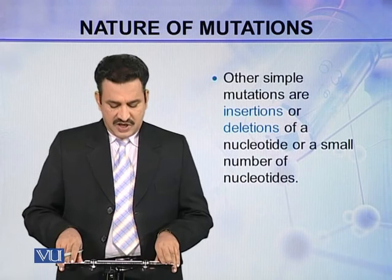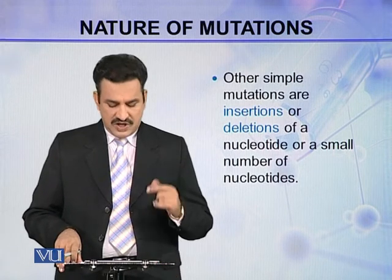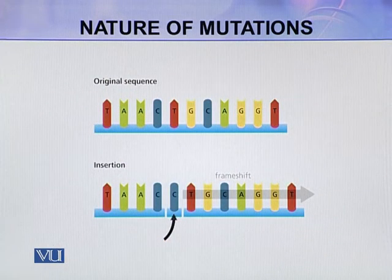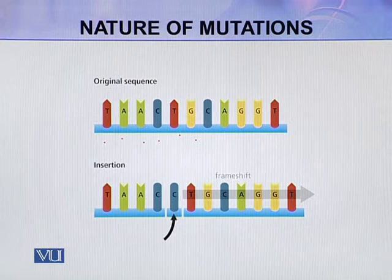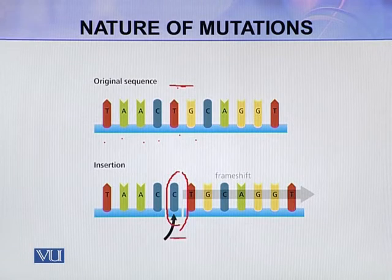Other simple mutations are insertions or deletions of a single nucleotide or a small number of nucleotides. For example, here you can see the sequence T, A, A, C, T, G. This is an insertion where this C was not present in the original sequence but is now inserted. By the insertion of this single base, the whole rest of the sequence will be frameshifted.